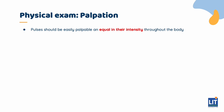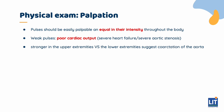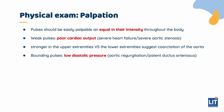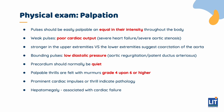Pulses should be easily palpable and equal in their intensity throughout the body. Generalised weak pulses suggest poor cardiac output, either due to severe heart failure or severe aortic stenosis. Pulses that are stronger in the upper extremities compared to the lower extremities suggest coarctation of the aorta. Bounding pulses are felt in patients with a low diastolic pressure due to aortic regurgitation or presence of a systemic-to-pulmonary arterial connection such as patent ductus arteriosus. The precordium should normally be quiet. Hyperdynamic circulation due to increased pulmonary blood flow, right ventricular hypertrophy, or left ventricular hypertrophy will cause prominence of the right or left ventricular impulses. Palpable thrills are felt with murmurs grade 4 or higher, and prominent cardiac impulses or thrills indicate pathology. Hepatomegaly may reflect a high right atrial pressure associated with congestive cardiac failure.